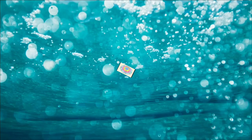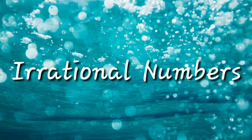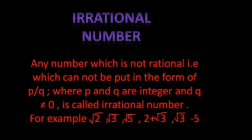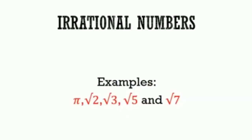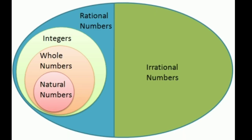The next category is irrational numbers. As the name indicates, irrational numbers are the opposites of rational numbers. We can define them as any number which is not a rational number — that is, which cannot be put in the form of p by q — is known as an irrational number. It means we cannot write them in the form of fractions. For example, root 2, root 3, root 5 are all irrational numbers. More examples are pi, under root 2, under root 3, under root 5, and under root 7. Looking at the diagram, rational numbers and irrational numbers are opposite to each other, with irrational numbers forming a separate category.